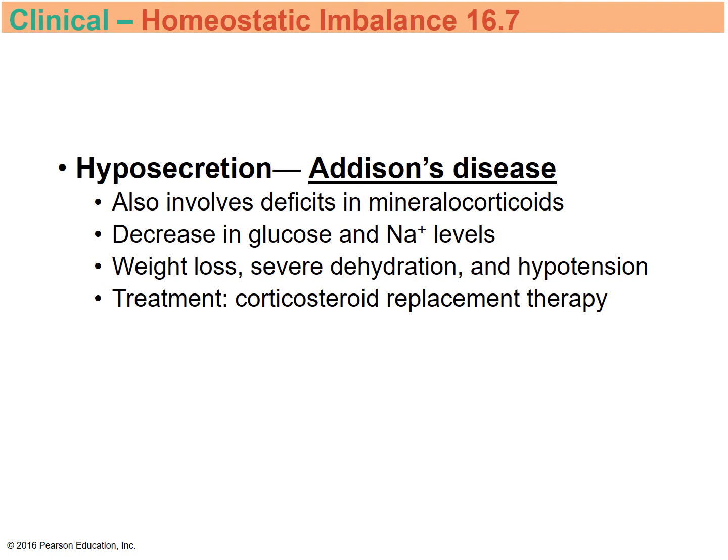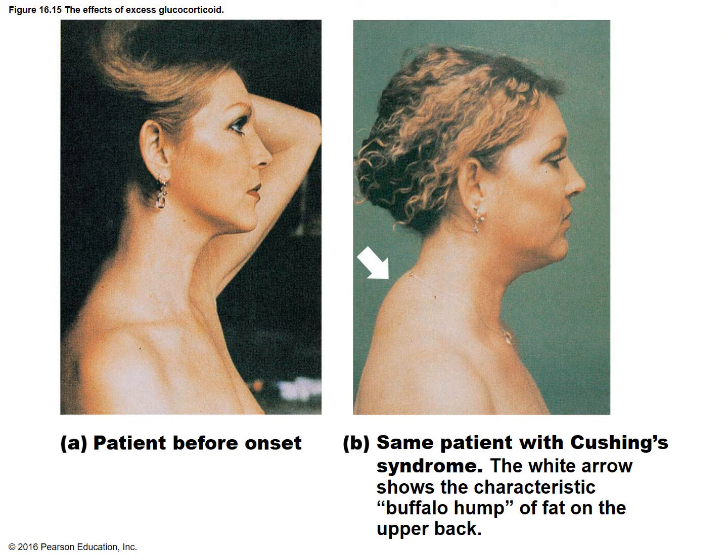Hyposecretion is known as Addison's disease — it results in decreased glucose and sodium levels, weight loss, severe dehydration, and hypotension. Treatment is replacement therapy. A picture shows the effects of excess glucocorticoids: a patient before and after, with an arrow pointing to the buffalo hump.